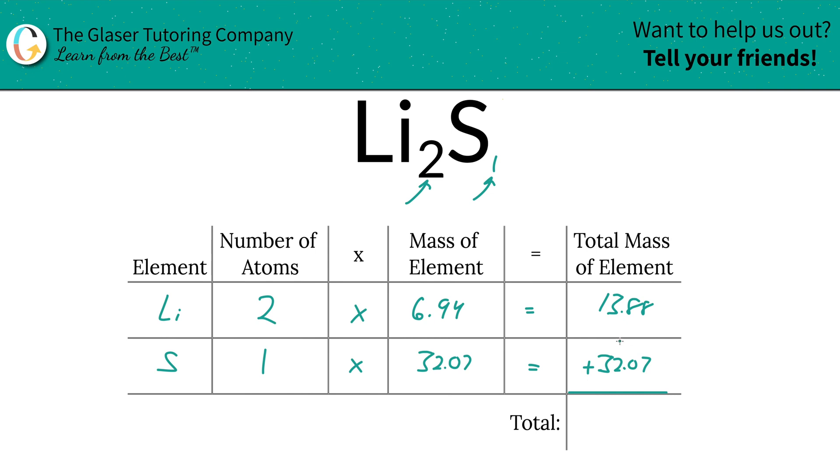I think you see where we're going. To find the total mass of the entire compound, just simply add up this column. So that's going to be 45.95.